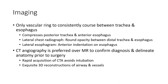Imaging: pulmonary sling is the only vascular ring to consistently cause a soft tissue density between the trachea and esophagus. It causes compression of the posterior trachea and anterior esophagus. On lateral chest radiograph, there is a rounded soft tissue between the distal trachea and esophagus. CT angiography is preferred over MRI to confirm diagnosis and delineate anatomy prior to surgery. Rapid acquisition of CTA avoids intubation and acquires 3D reconstruction of the airway and vessels.